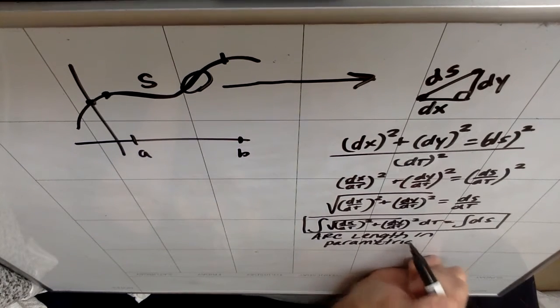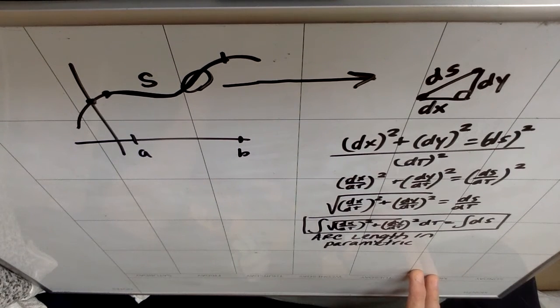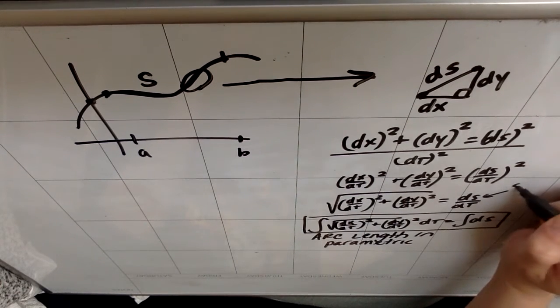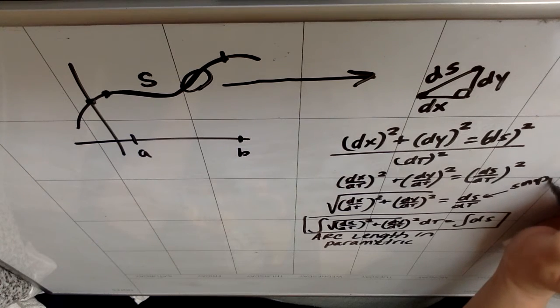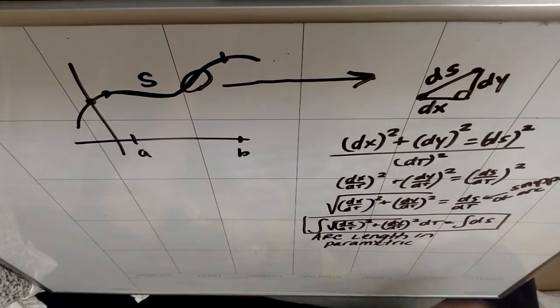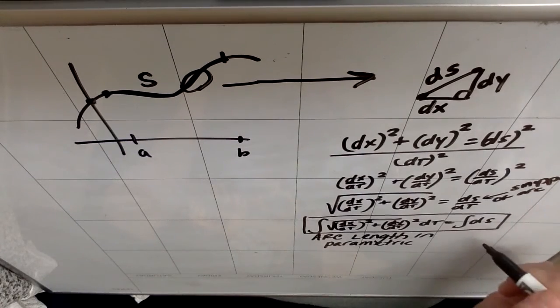This is fairly intuitive based on the formula we had for arc length before. This is a way to find my tiny little snippet of arc length. This would be the way I'd find my total arc length S, by adding up all the snippets.